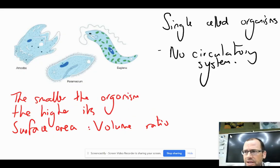Circulatory systems - what need do we have for them? Why do we have circulatory systems? Well, if you look at single-celled organisms, there is no circulatory system. So why not? Why don't they need one?